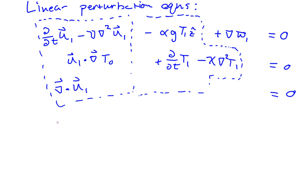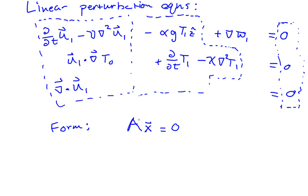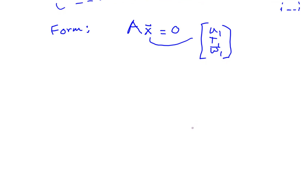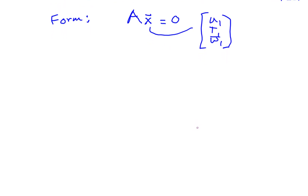This linear form suggests we should write this as Ax equals zero for some vector x, because the right-hand side is zero for all quantities — a matrix applying to a vector. The vector x is our variables u1, t1, and pomega1, and our matrix A will take the same form. This linear algebra form will be a powerful way to consider these equations when we move on to wave analysis.